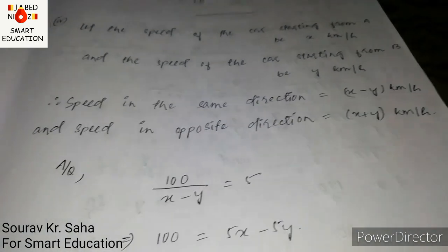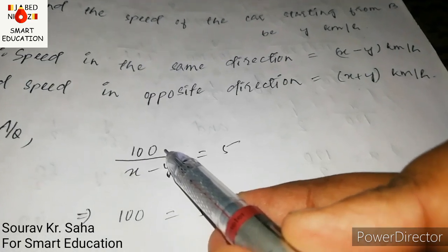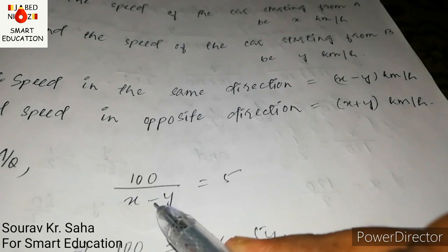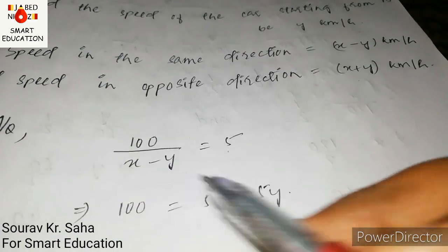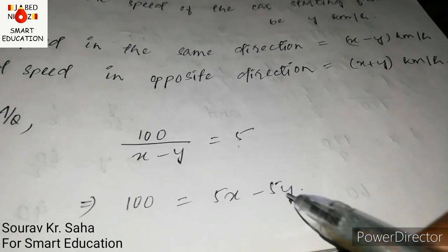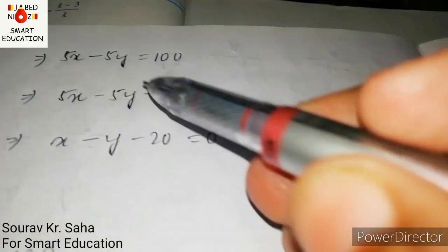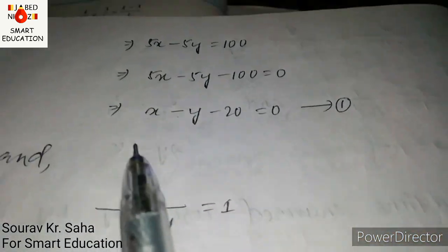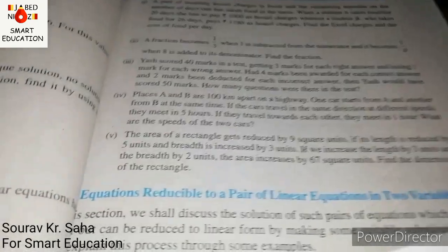Using the formula: distance divided by speed equals time. When travelling in the same direction, the relative speed is x minus y and the distance is 100 km covered in 5 hours. So 100 divided by (x minus y) equals 5, giving 5x minus 5y equals 100. Dividing by 5: x minus y minus 20 equal to 0. This is equation one.